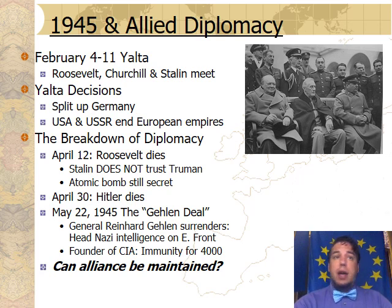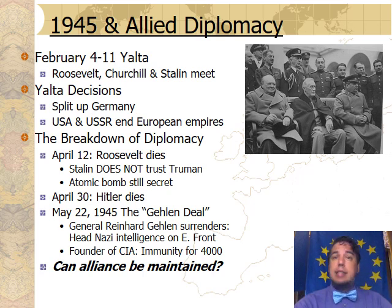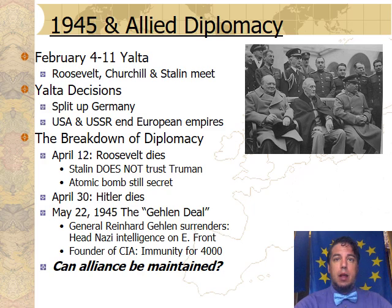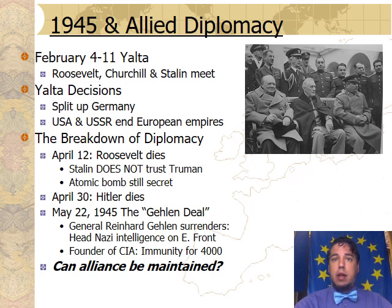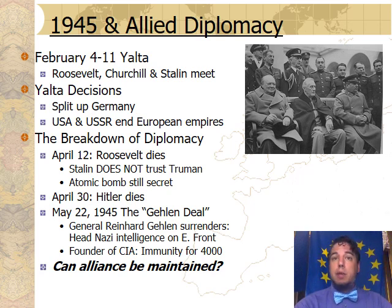Harry Truman, for the fact that he had only been president for just over a month and knew very little about international relations, accepted this offer from Reinhard Galen and hired on Nazi war criminals to assist in the creation of a new intelligence agency. Now the great question facing the world was: while the Grand Alliance of Britain, the United States, and the Soviet Union had brought an end to Hitler's reign, could this alliance be maintained, particularly the friendship of the Americans and the Russians?